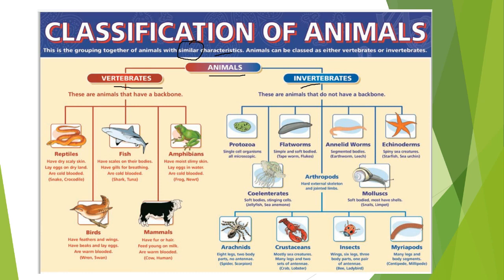Animals are grouped into vertebrates and invertebrates. Vertebrates have a backbone; invertebrates do not. Vertebrates are classified into reptiles, fishes, amphibians, mammals, and birds. Invertebrates include protozoa, flatworms, annelids, echinoderms, arthropods, and molluscs. Annelids have a segmented body — for example, earthworms. Arthropods also have a segmented body with jointed limbs and a hard external skeleton called an exoskeleton. You can notice the origin of arthropods from annelid members.